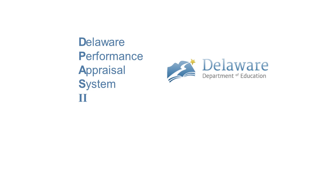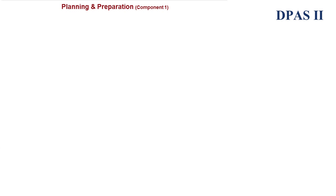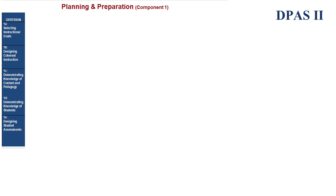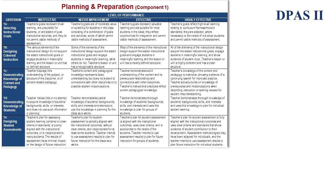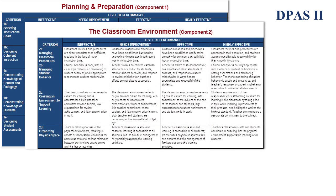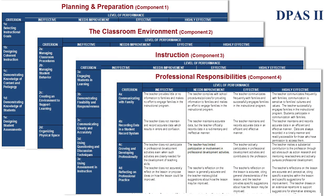One way to take a look at the impact on teacher performance is through the lens of the Delaware Performance Appraisal System, provided by the Delaware Department of Education and through the work of Charlotte Danielson. Each of the four initial components of the DPAS II rubrics has Criterion and Level of Performance. The four components include Planning and Preparation, The Classroom Environment, Instruction, and Professional Responsibilities.